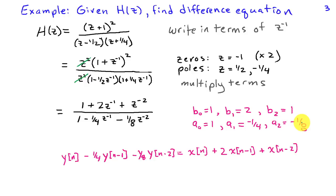we can write the difference equation as y of n minus 1 fourth y of n minus 1 minus 1 eighth y of n minus 2 is equal to x of n plus 2 x of n minus 1 plus x of n minus 2.